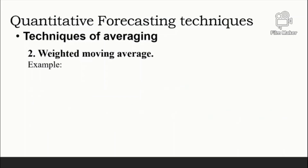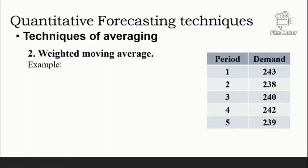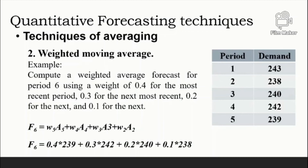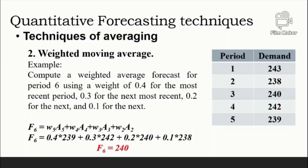For the weighted moving average example, compute a weighted average forecast for period 6 using a weight of 0.4 for the most recent period, 0.3 for the next most recent, 0.2 for the next, and 0.1 for the next. F6 equals 0.4 times 239, plus 0.3 times 242, plus 0.2 times 240, plus 0.1 times 238, which equals 240. The forecasted demand for period 6 using the weighted average is 240.